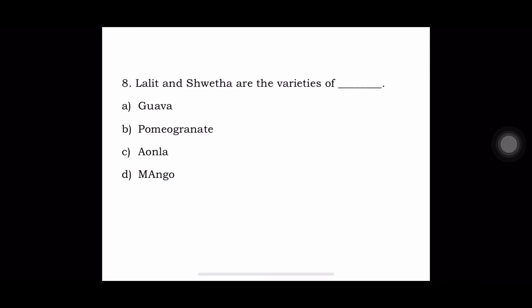Next question: Lalit and Shweta are the varieties of — A. Gourd, B. Pomegranate, C. Amla, or D. Mango. The answer is Gourd.